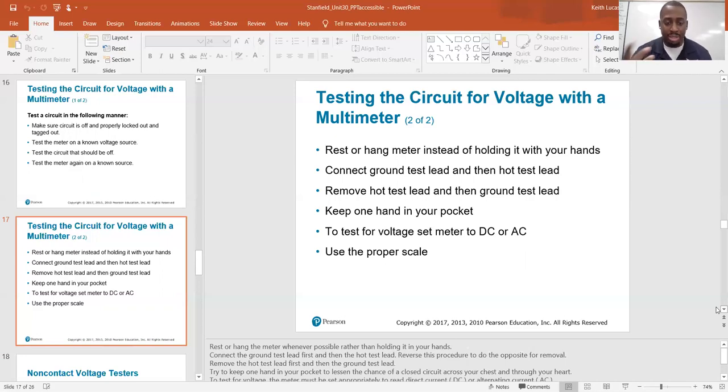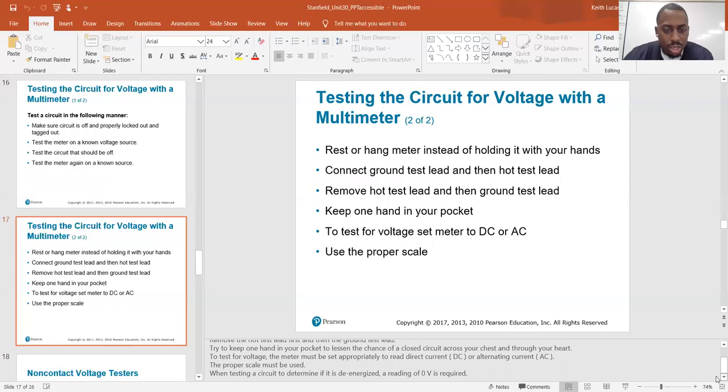Rest or hang the meter whenever possible rather than holding it in your hands. Connect the ground test lead first and then the hot test lead. Reverse this procedure for removal. Remove the hot test lead first and then the ground test lead. Try to keep one hand in your pocket to lessen the chance of a closed circuit across your chest and through your heart. To test for voltage, the meter must be set appropriately to read direct current or alternating current. The proper scale must be used. When testing a circuit, determine if it is de-energized. A reading of zero voltage is required.